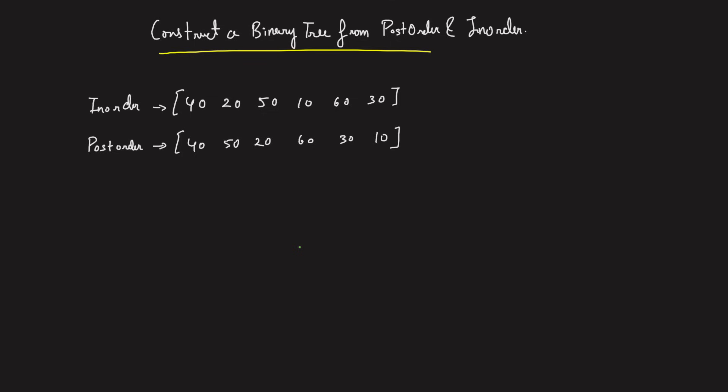Hey everyone, welcome back to the channel. Today we will be solving the problem: construct a unique binary tree from a given postorder and inorder. Why unique? Because if you are given an inorder and a preorder or postorder, you can only create a unique binary tree. I discussed this in detail in the previous video, so watch that first for a clear idea of why we need both traversals.